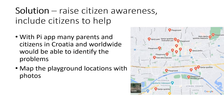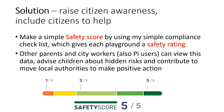The solution to this problem is to raise citizen awareness and include citizens to help. With the Pi App, many parents and citizens in Croatia and worldwide would be able to identify the problems. They would be able to map the playground location with photos, and beside that they would be able to score each playground by simply filling in a specially prepared safety checklist, giving each playground a safety rating. Other parents and city workers who are also Pi users can view this data, advise children about hidden risks, and contribute to moving local authorities to make positive action.